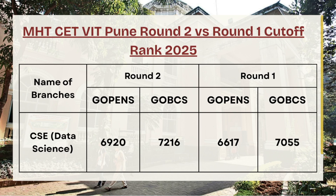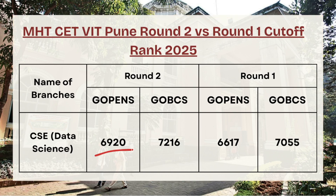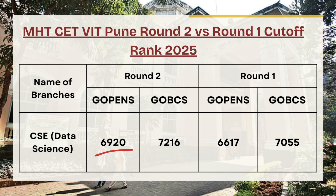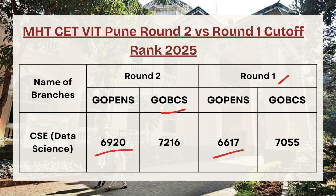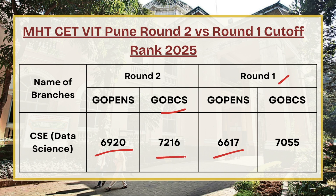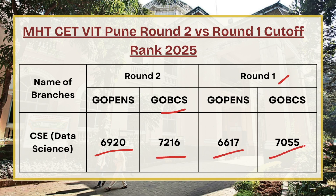Next in the list we have CSE in Data Science. For G Open category, the cutoff rank was 6,920 in round two whereas in round one it was 6,670. For G OBC category, the cutoff rank was 7,216 for round two whereas in round one it was 7,055.